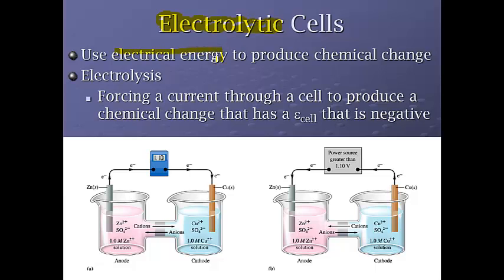These use electrical energy to produce chemical changes. Now electrolysis is forcing a current through a cell to produce a chemical change that typically has a cell potential that is negative. So we're going to override that by using electrical energy to produce a chemical change.